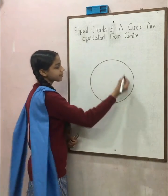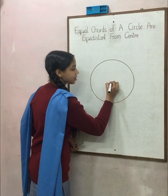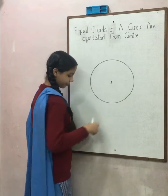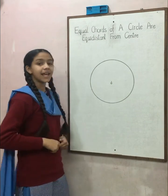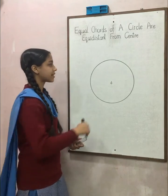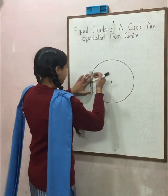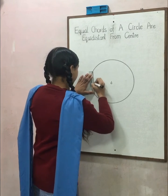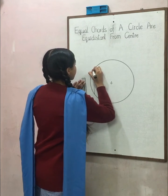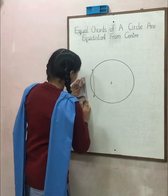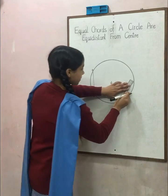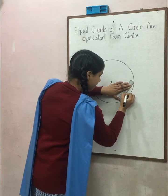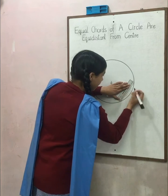First of all, draw a circle with any center and any radius. Let the center be O. Now, draw two equal chords inside the circle: A, B and C, D.